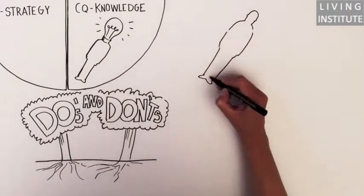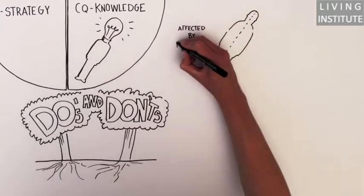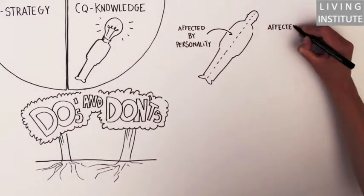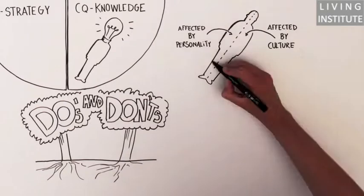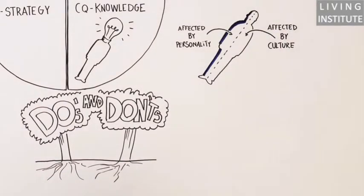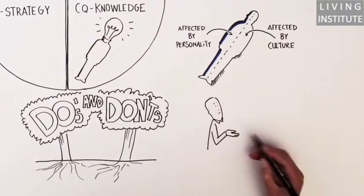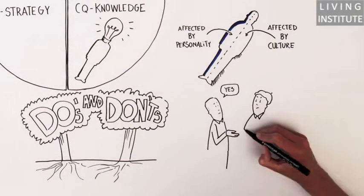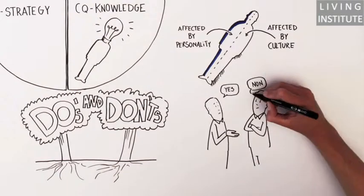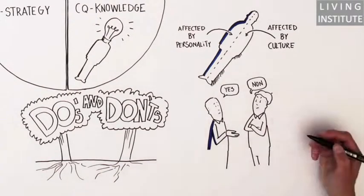In a way, people who are high on CQ knowledge can distinguish between behavior primarily affected by personality or behavior primarily affected by culture. You might think this is irrelevant. Say, if you're having a local problem at your French office with Pierre, does it really matter if that issue is because of Pierre's nationality or because of his personality? A problem is a problem.